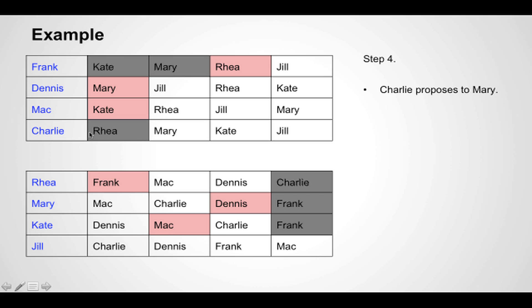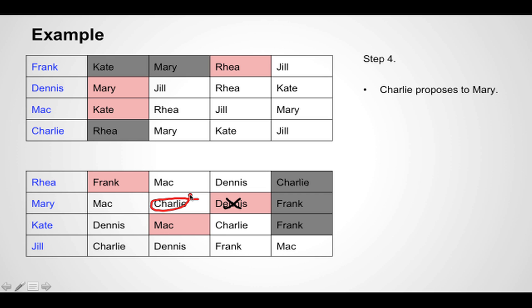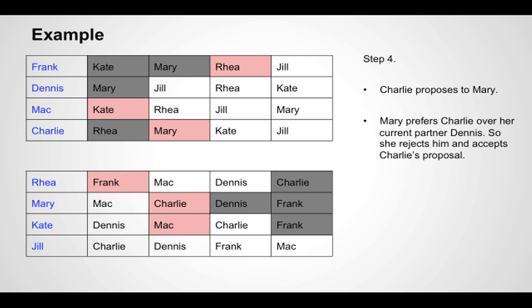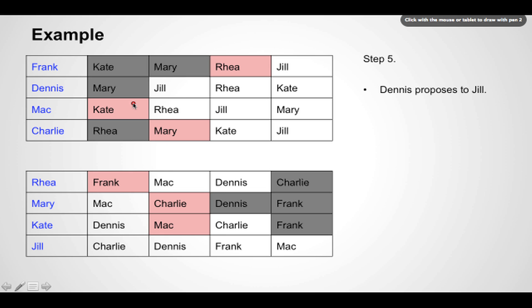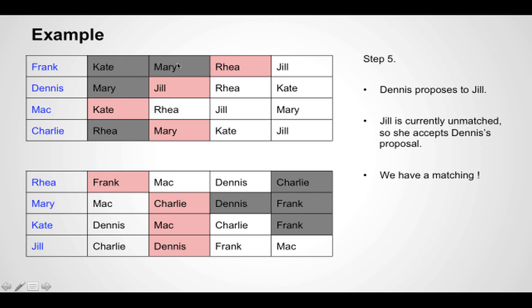In step four, Charlie proposes to Mary, the next woman on his list. Mary is currently paired with Dennis, but she prefers Charlie over Dennis, so she rejects Dennis and accepts Charlie's proposal. Now Charlie and Mary are paired, but Dennis is unpaired. Dennis proposes to the next woman on his list — Jill — who has been unpaired this whole time, so she readily accepts. At the end of step five, Frank is paired with Rhea, Dennis with Jill, Mac with Kate, and Charlie with Mary. There are no more unmatched men, so the algorithm terminates.